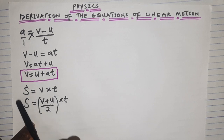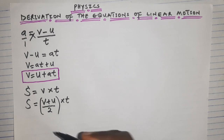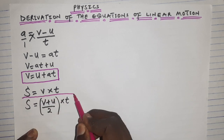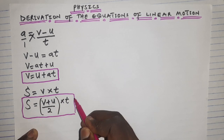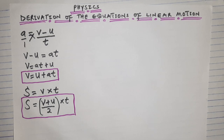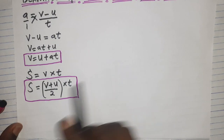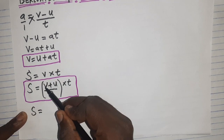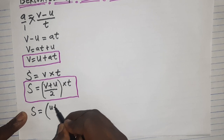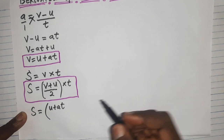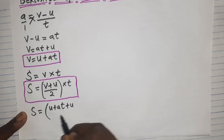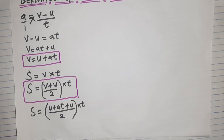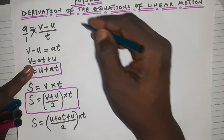Since v = u + at, anywhere there is v in this equation I'll replace it with u + at. So s = (u + at + u) / 2 × t. It's very important to note this because it will help us get the remaining equations.